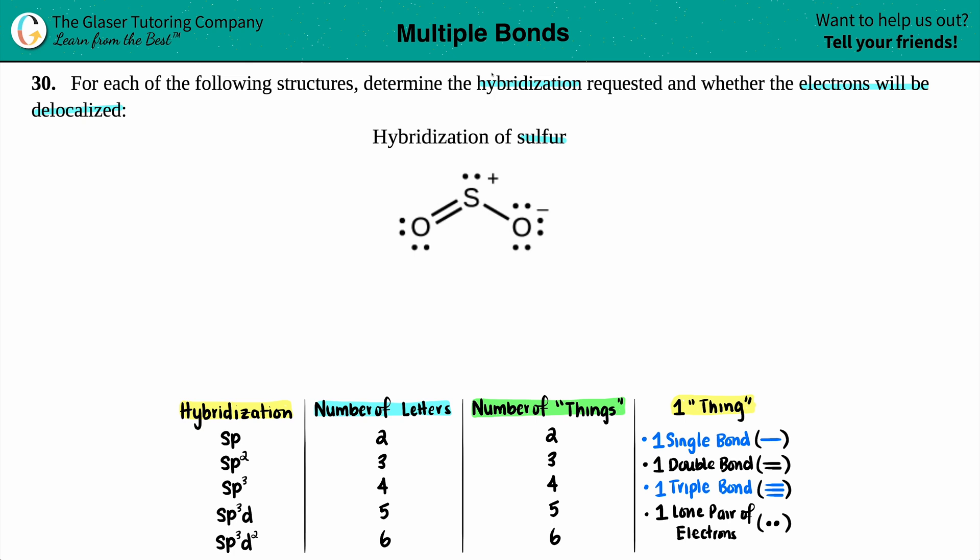So here's the Lewis structure and we're going to work off of that. Now in this case, there's only one sulfur, which is even better, so we only have to find out one hybridization in this entire molecule. Now just know that there are five total hybridizations ranging from sp all the way down to sp3d2.